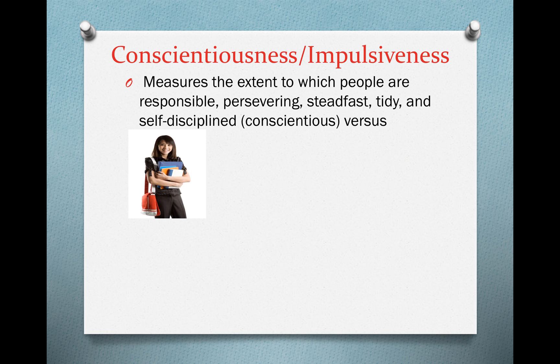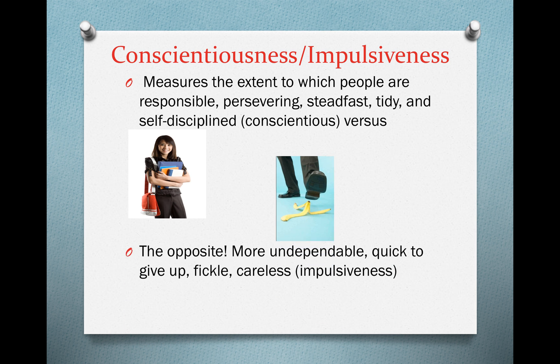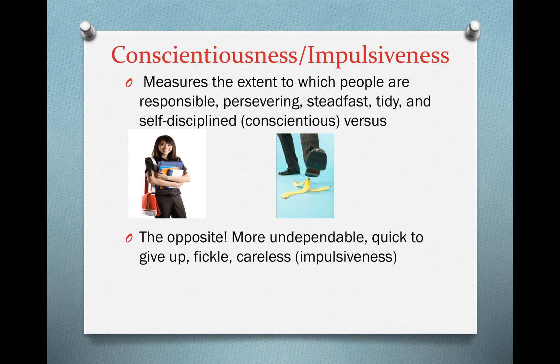Conscientiousness versus impulsiveness: a conscientious person is responsible, they persevere, you can count on them, they're tidy and disciplined. The opposite — someone impulsive — is more undependable, more likely to give up easily, and may seem careless or impulsive to other people.